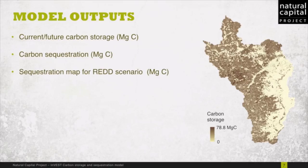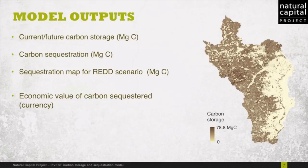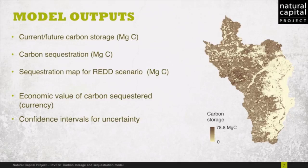If a REDD policy map is provided, output will include a sequestration map for that REDD scenario. If economic information is provided, valuation results will be generated based on the amount of carbon sequestered. If uncertainty information is provided for the carbon pools, confidence intervals for the uncertainty analysis will be calculated. In all cases, an HTML summary page is created containing a compilation of all of these results.